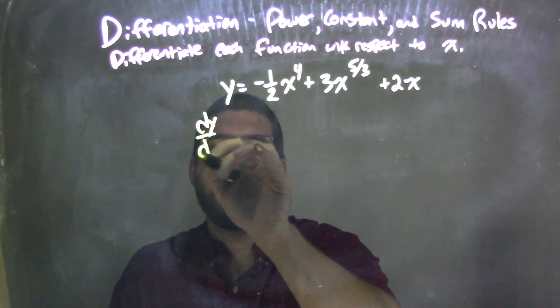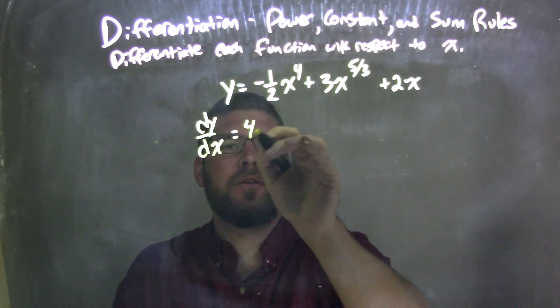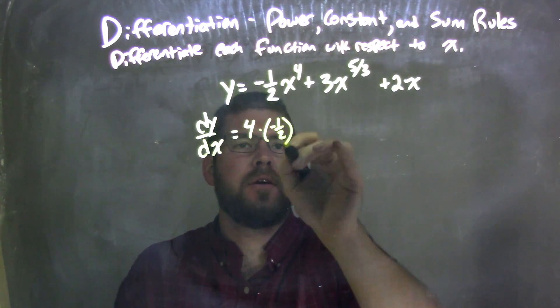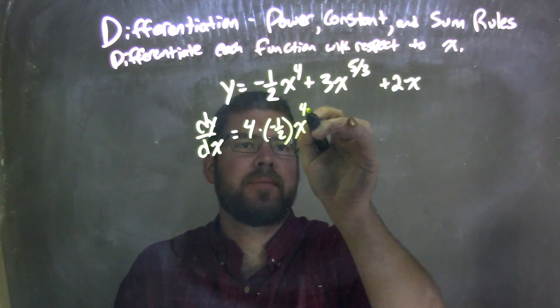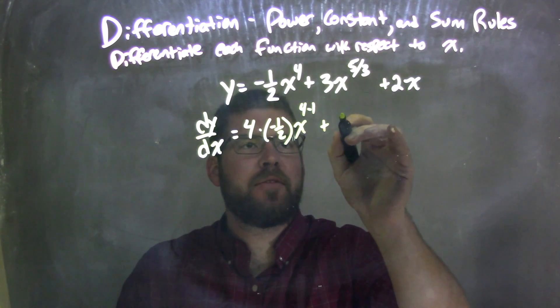I have dy dx. The power rule says 4 comes out front, 4 times negative one-half x to the 4 minus 1 power right there.